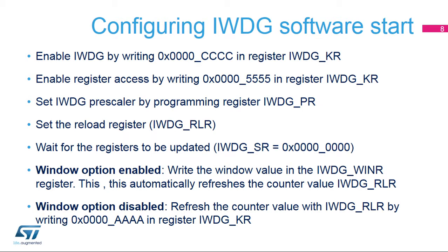The Independent Watchdog software start is configured in only a few steps. First, write the key register with value 0xCCCC to start the Watchdog. Then remove the register protection by writing 0x5555 to unlock the key. Set the Independent Watchdog prescaler in the IWDG_PR register by selecting the prescaler divider feeding the counter clock. Write the reload register IWDG_RLR to define the value to be loaded in the Watchdog counter. After accessing these registers, wait for the IWDG_SR bits to be reset to confirm the registers have been updated.